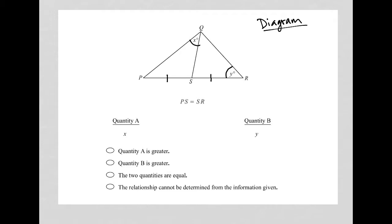And I always like to take a look at my diagram just to see, is there anything else that I can figure out based upon this information? Is there anything else that I know about this triangle as a whole, or maybe even the two separate triangles, PQS and QRS?